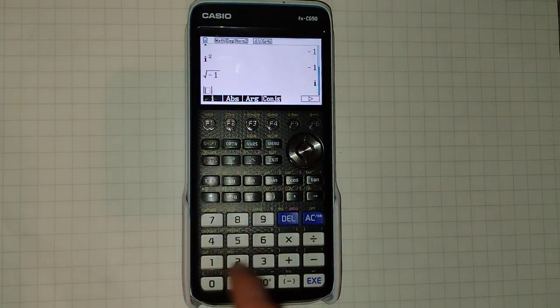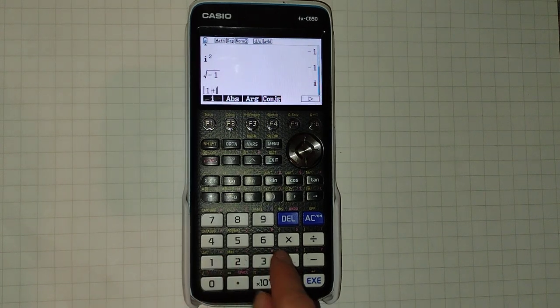Abs is the absolute value, and this just gives us the modulus, the absolute value of our complex number.